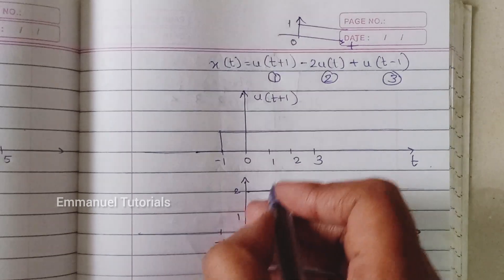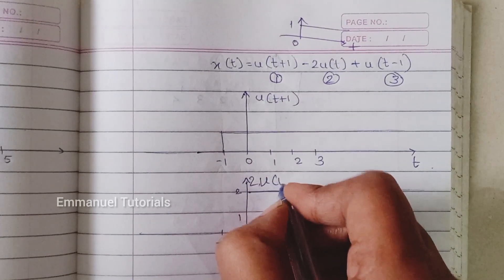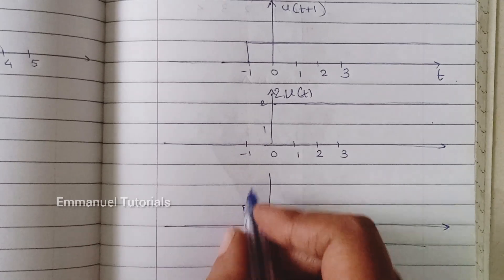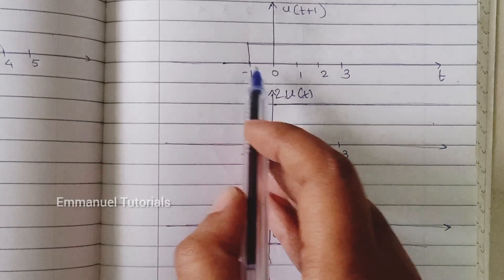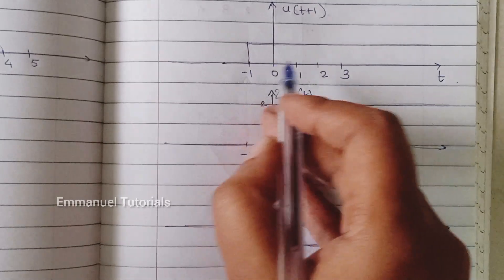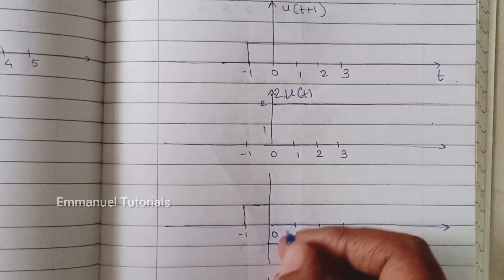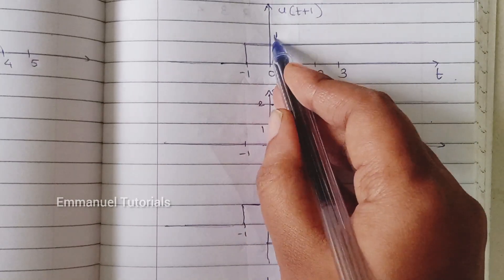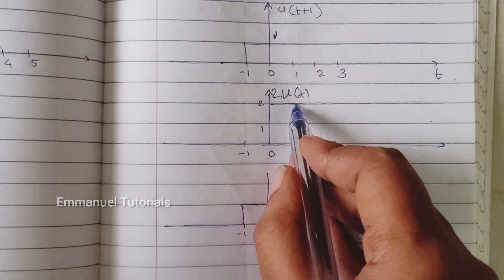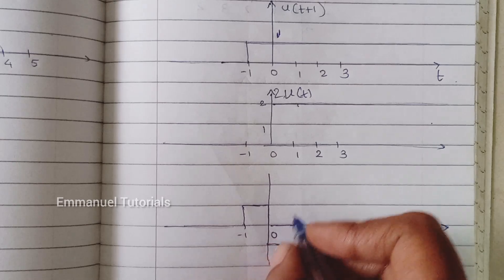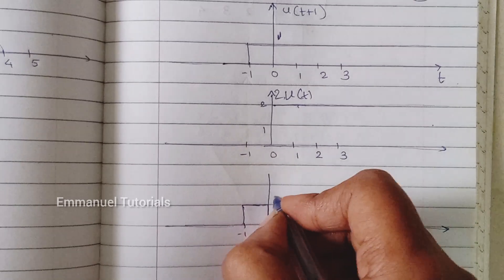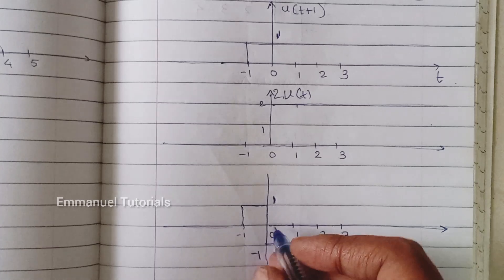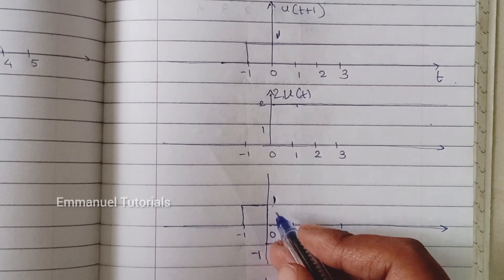Now we subtract the second part, 2u(t), from the first one, u(t+1). From minus one to zero, the first signal has amplitude one and the second has zero, so you draw the first signal's shape as-is. From zero onward, the first signal has amplitude one and the second has amplitude two, so one minus two gives minus one — a step decrease at t equals zero from one to minus one.